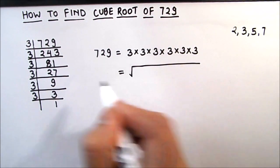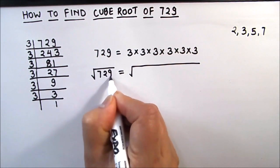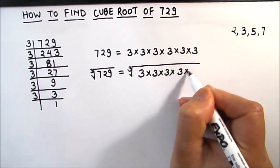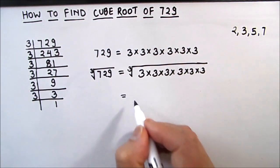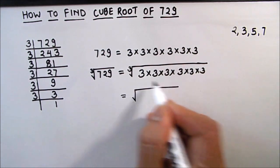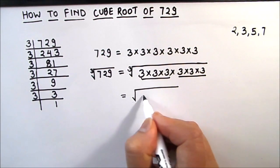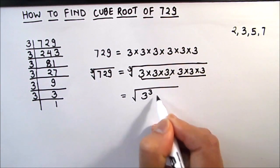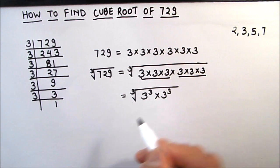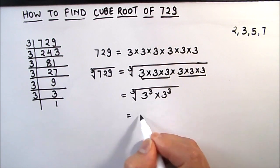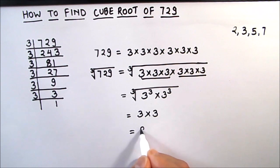Now as we are taking the cube root, we are going to write these numbers under the cube root sign. So 3 times 3 is our number. As these numbers are under the cube root sign, we can take three 3s together and write them as exponents — so 3 cubed times 3 cubed. The cube root of 3 cubed is 3, and we get 3 times 3, which is equal to 9.